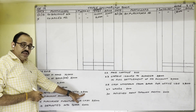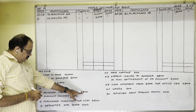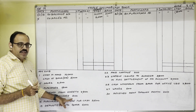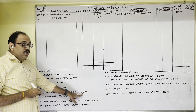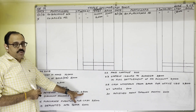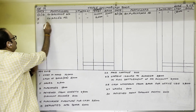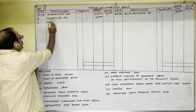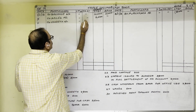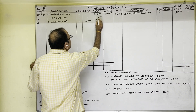11th November: Received from Vineet 4,800, discount allowed 200. From Vineet we had to receive 5,000 rupees. As a final settlement he gave 4,800 rupees cash, so 200 is discount allowed. Cash is coming into the firm — debit side cash column. Write 11th date: 'To Vineet account', in the discount column 200 rupees, in the cash column 4,800 rupees.